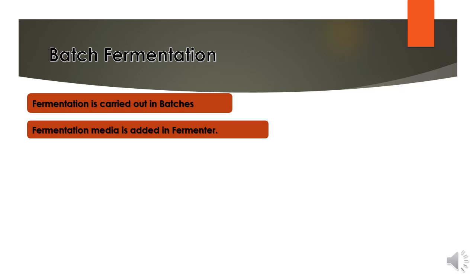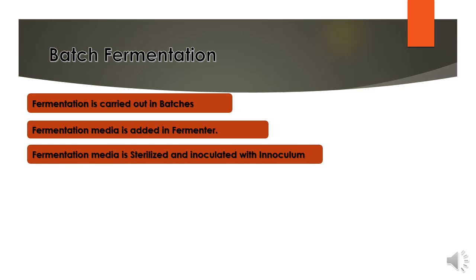In batch fermentation, the first step is adding of fermentation media in the fermenter. This fermentation media is then sterilized by autoclaving and further inoculated with inoculum. Inoculum are the microorganisms that are going to carry out the fermentation process.